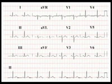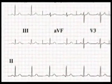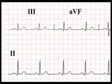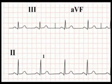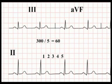Look at the rhythm strip on this ECG. There is one R wave present to every five large squares. So in 300 large squares there will be 60 R waves present. This patient's heart rate is therefore 60 beats per minute.